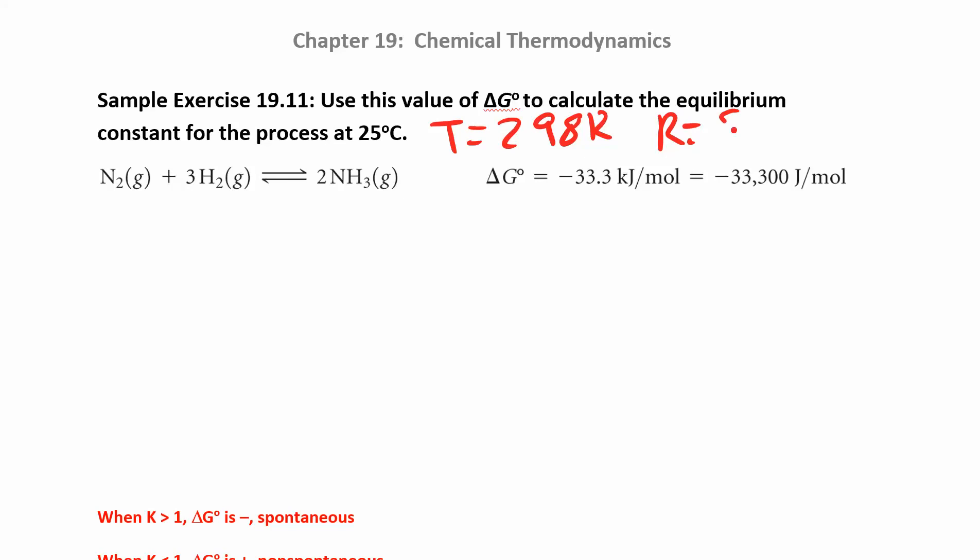R, again, 8.314 joules per mole Kelvin. You can do this in kilojoules or in joules, it really doesn't matter. You should get the same answer, just as long as you're consistent. If you're going to use your delta G naught in kilojoules, then R has to be in kilojoules. If you're going to use your delta G naught in joules, then R has to be in joules. We'll do it in joules this time, just to show you that it'll still work.